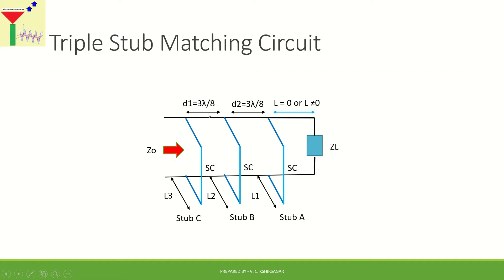The d1 and d2 indicate the spacing between stub C and stub B, and between stub B and stub A respectively — both fixed. From the double stub theory we already know there could be two cases: the first stub (stub A) may be located on the load itself, meaning length L equals zero, or it may be located at some distance away from the load, making L non-zero.